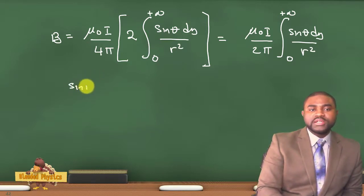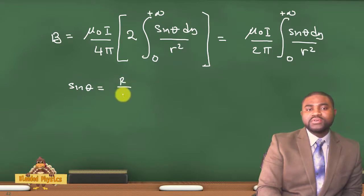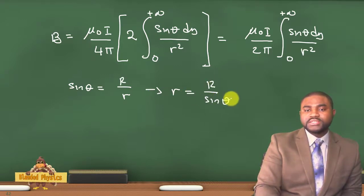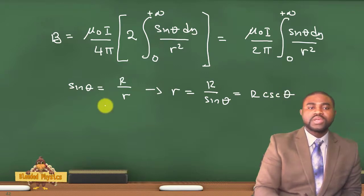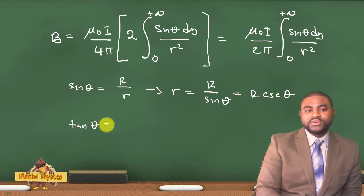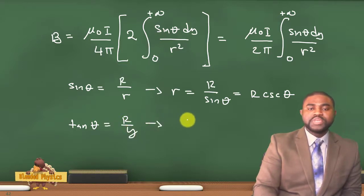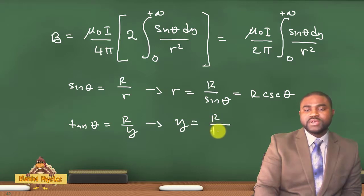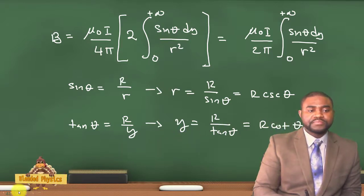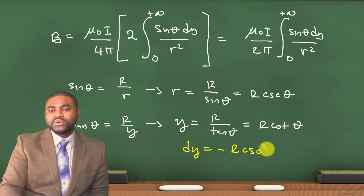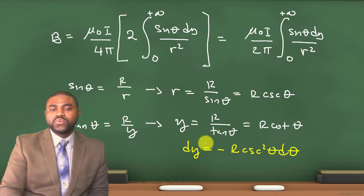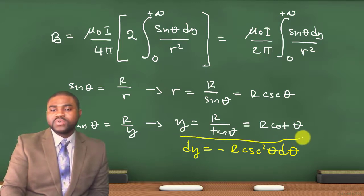Now sinθ is equal to R divided by r. This means that r is equal to R divided by sinθ, which is just R cscθ. Similarly, tanθ equals R over y, which means y equals R divided by tanθ, which is R cotθ. Hence dy is equal to negative R csc²θ dθ. So we can replace dy with this.